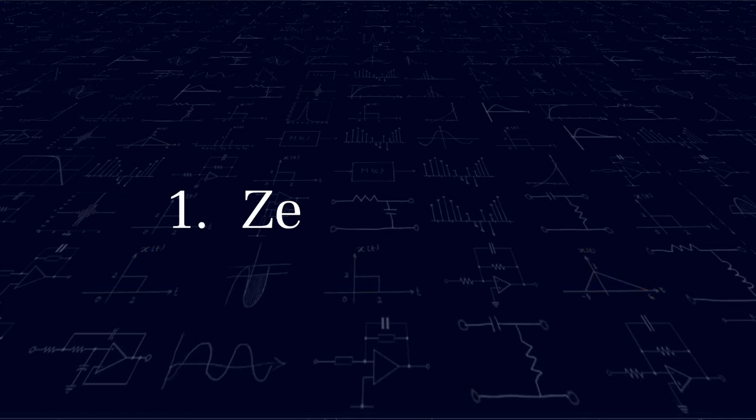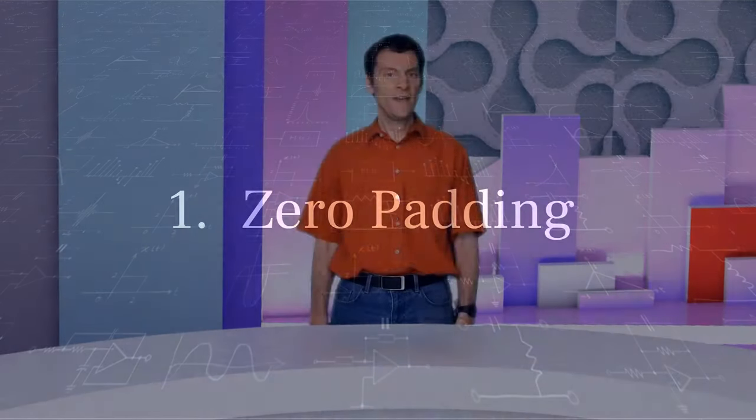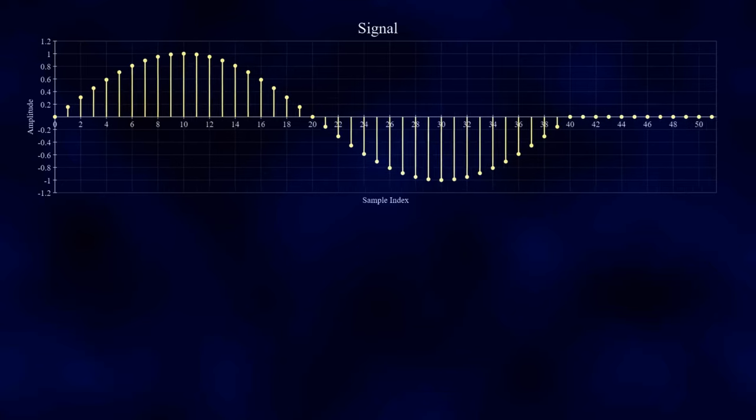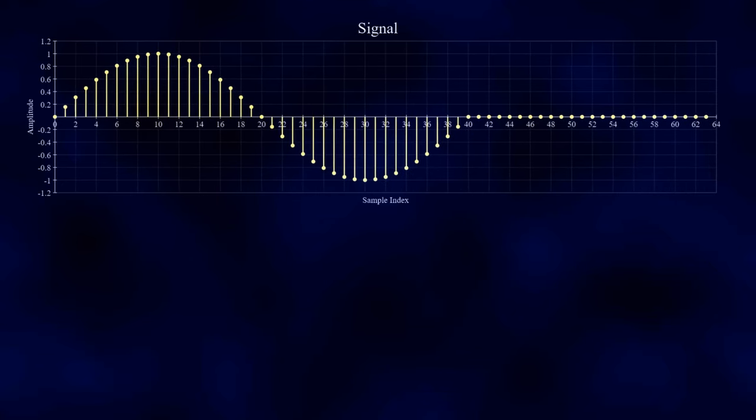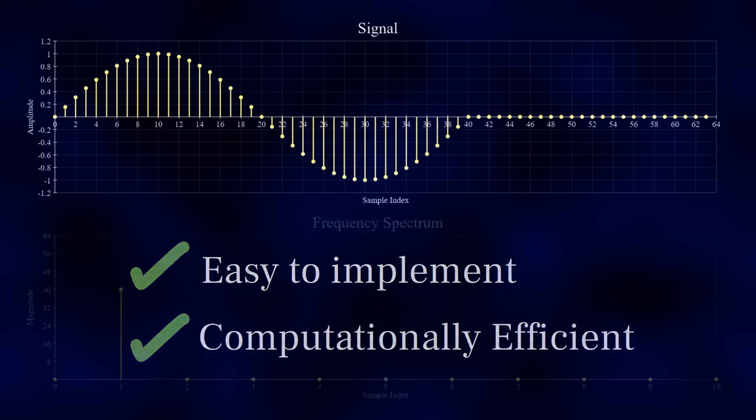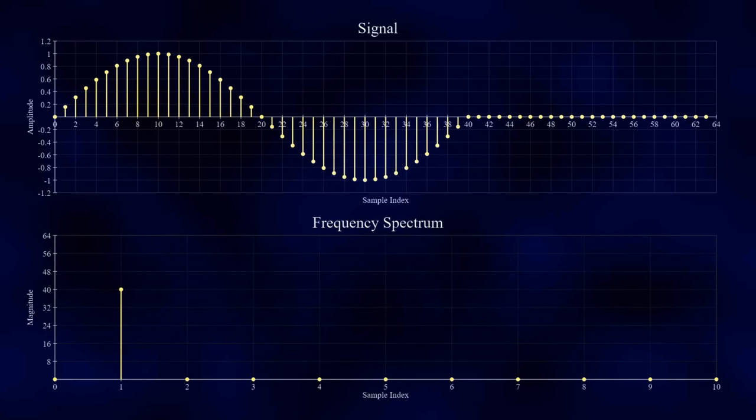Number 1: Zero Padding. This is perhaps the simplest way to ensure that your signal contains the correct number of samples. Zeros are simply added to the end of the signal until its length becomes a power of 2. It's easy to implement and computationally very efficient, but it reduces the frequency resolution of the output, as the zero samples smear the frequency peaks like blurring a picture.